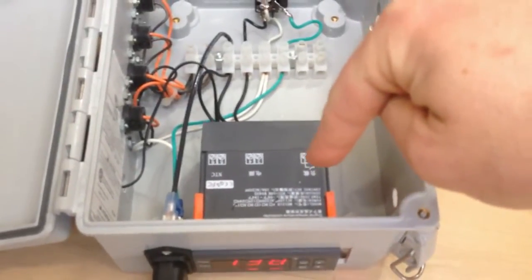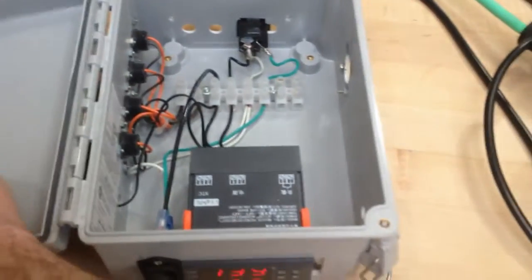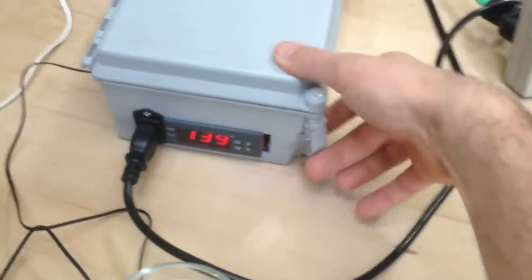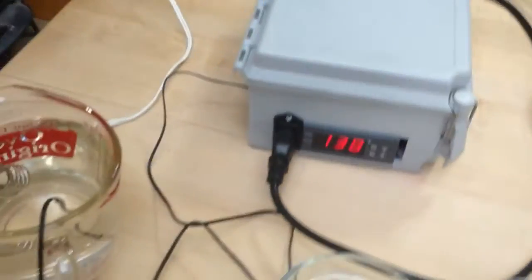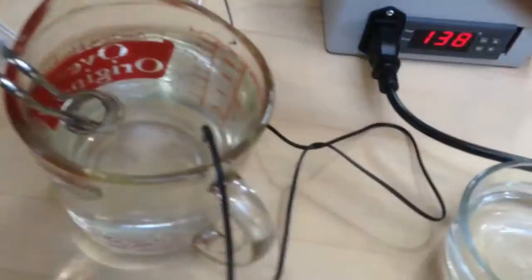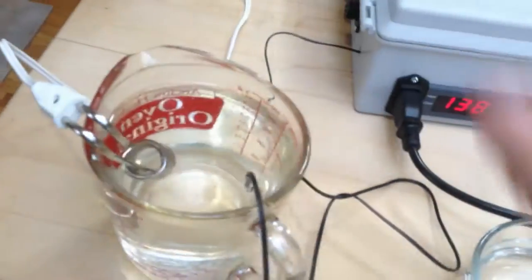which has a relay inside, and that runs a switched outlet. So basically, based on temperature, this thing turns an outlet on and off. That could be a crock pot, a rice cooker, or something like that. In this case, just a little 70-watt tea heater that I'm experimenting with.